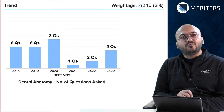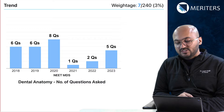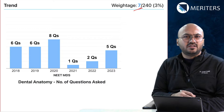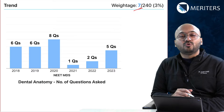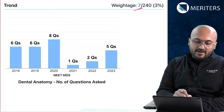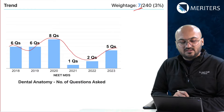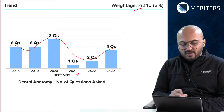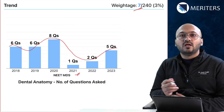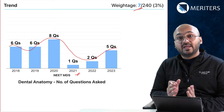The first thing we are going to focus on is the trend of questions and the average number of questions in DA, which is 7 — comprising nearly 3 percent — and you can score up to 28 possible marks in your NEET MDS exam. The trend has been pretty much constant over the past six years, except for 2021, where the number may have been lower due to possible overlap of this subject with many other subjects.